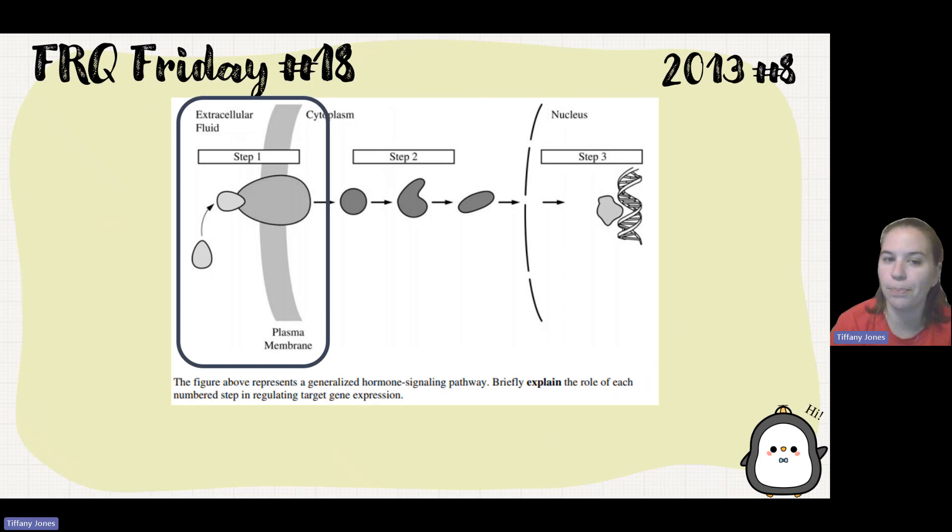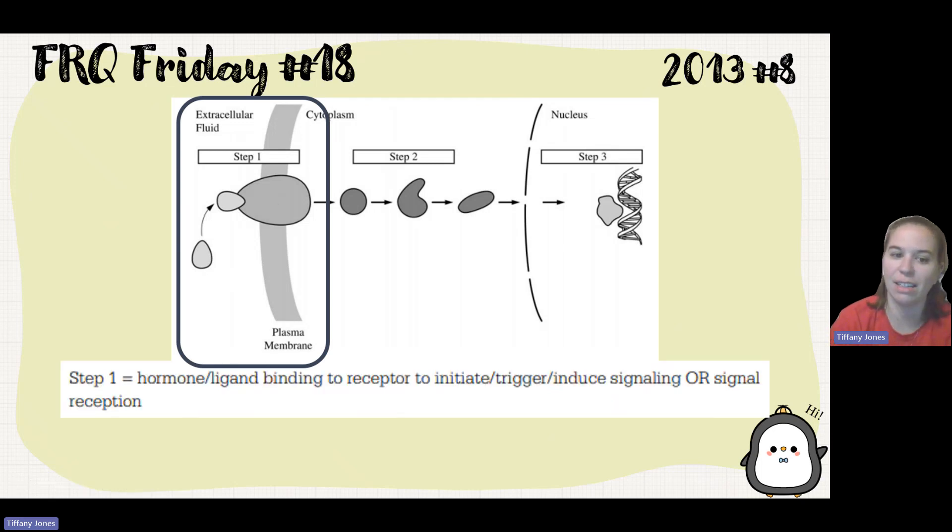So first let's look at step one. Step one, we have a signaling molecule, there's this ligand. Ligand binds the receptor which caused a conformational shape change which is gonna initiate signaling. So step one, hormone ligand binding receptor to initiate, trigger, and do signaling or just signal reception.